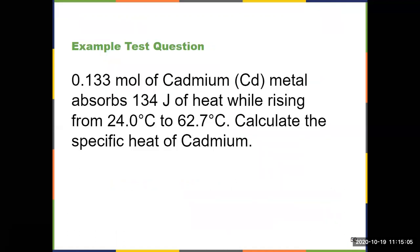The key takeaway is doing calorimetry problems using Q equals MC delta T and Q_system equals negative Q_surroundings. We finish with one more example test question where you're not given a specific heat — you're asked to calculate it. I recommend you pause the video and try this one on your own. You should get a final answer of 0.231 joules per gram degree Celsius, and I'll upload a separate video showing how to solve it. Make sure you pay attention to your units — the 0.133 moles of cadmium needs to be converted. After you're comfortable with Q equals MC delta T, we move on to the final subchapter, 5.3, where we learn all about enthalpy.